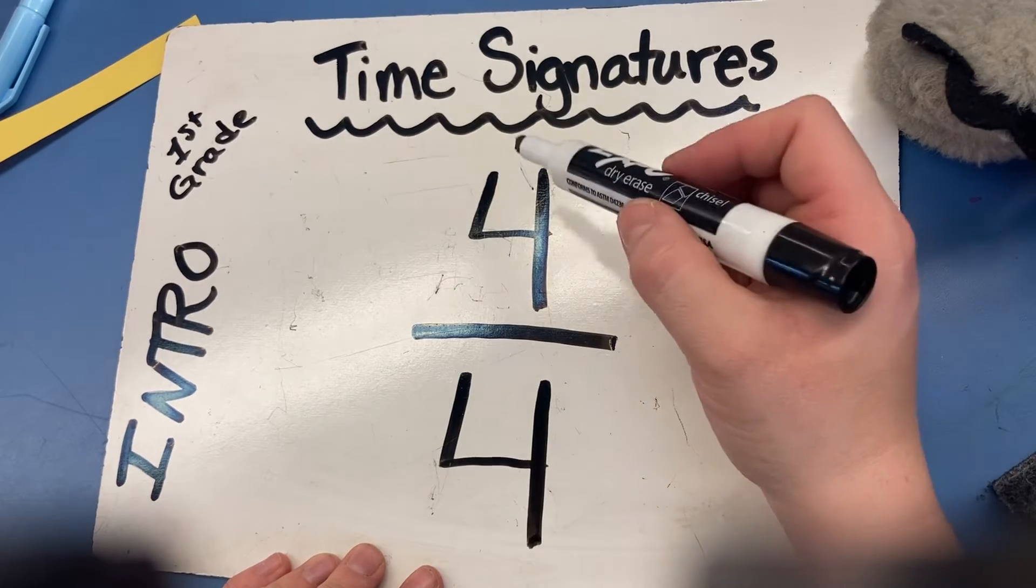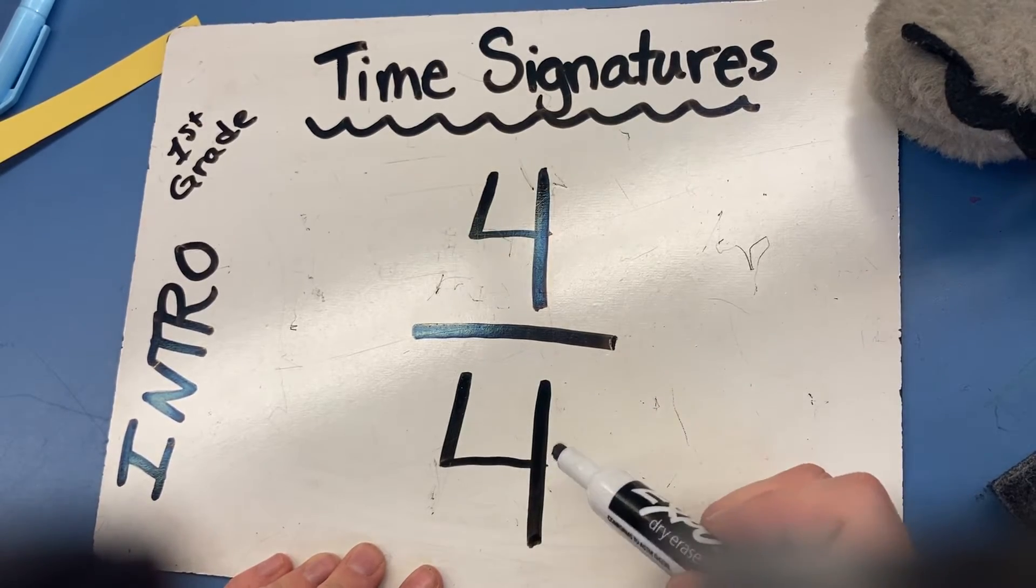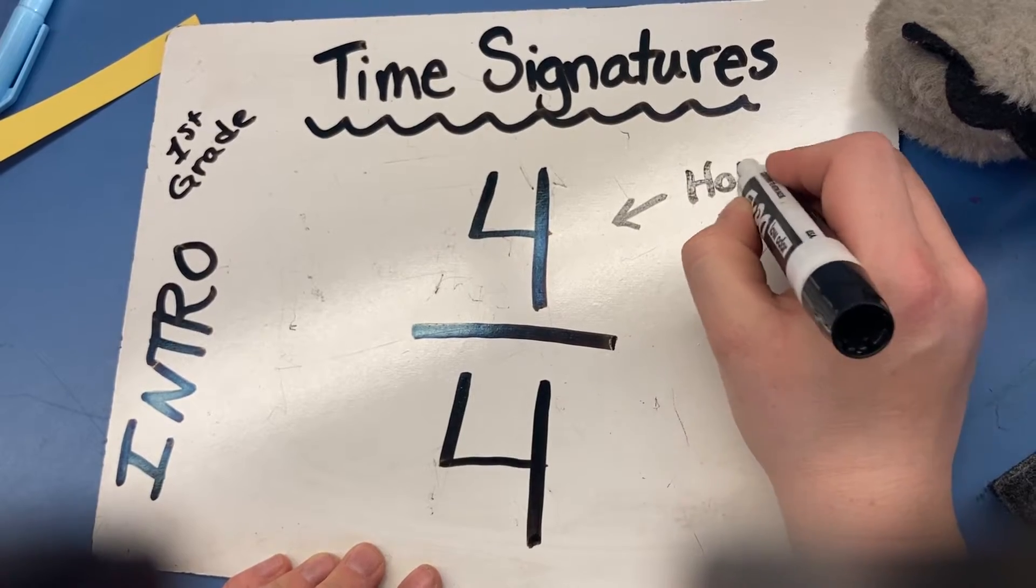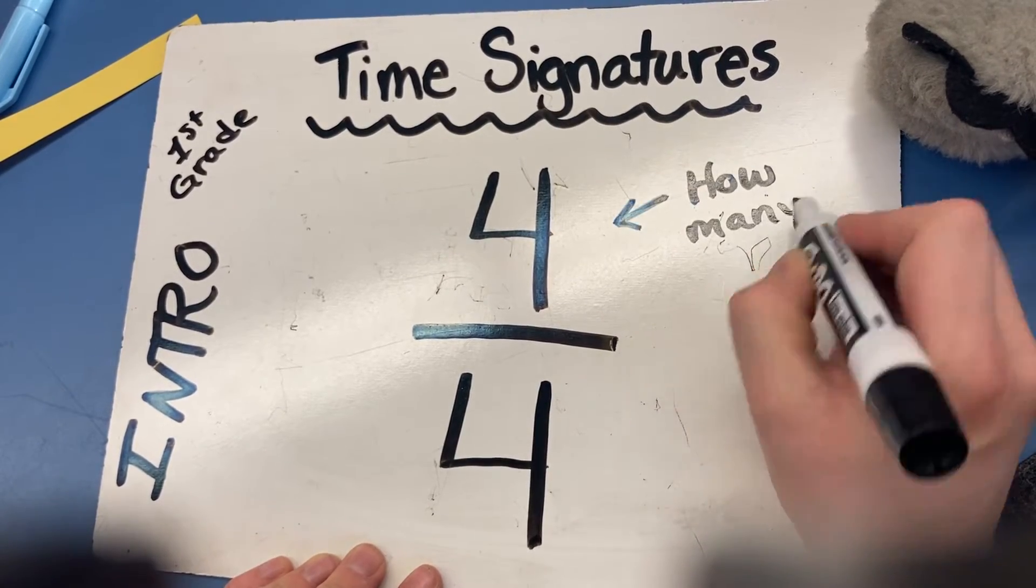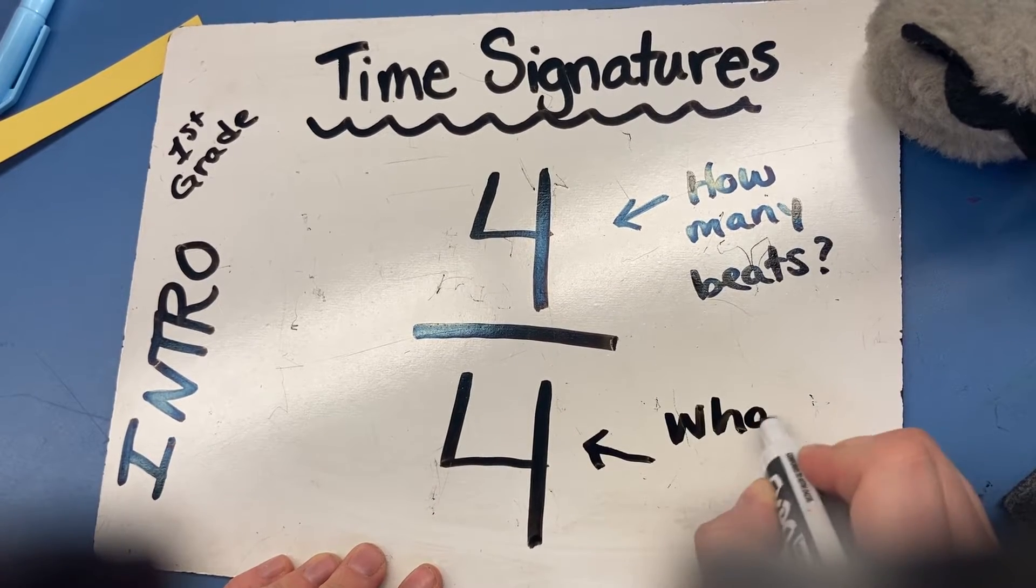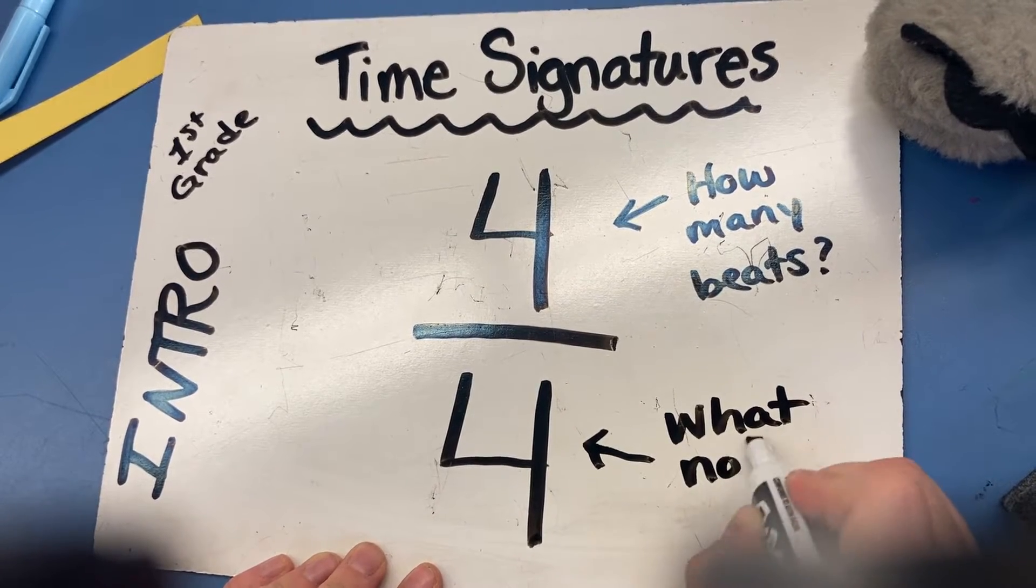Hey, that's pretty easy to remember. 4-4. This number tells us how many beats are in a measure. This number is going to tell us what note gets the beat.